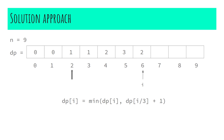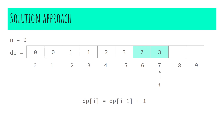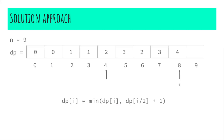Moving to index seven: I store three. Since seven is neither divisible by two nor three, the value remains three. Moving to index eight: I first store four. Since eight is divisible by two, I compare dp[8/2] + 1 = dp[4] + 1 = 3, which is less than four, so I replace the value at index eight with three.